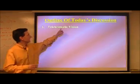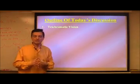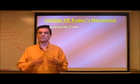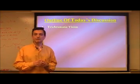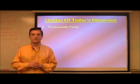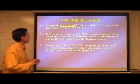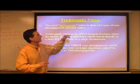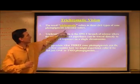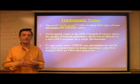Trichromatic, as you will see, means that we have three different cone types. We'll be discussing today what are the implications of having three different cone types, and we'll consider some hypothetical cases of animals that might have just one cone type — a monochromat — or two cone types, a dichromat. Trichromatic refers to three types of cones or photopigments; chroma corresponds to color, so for trichromatic we have three cone types.